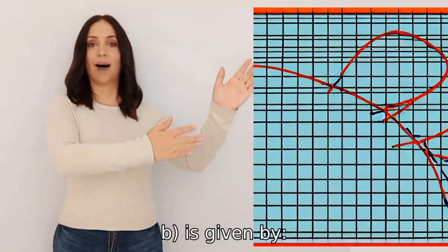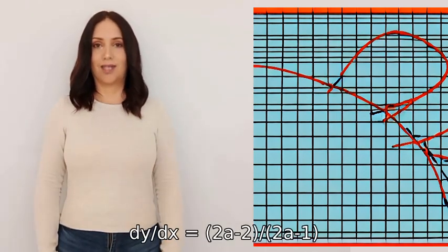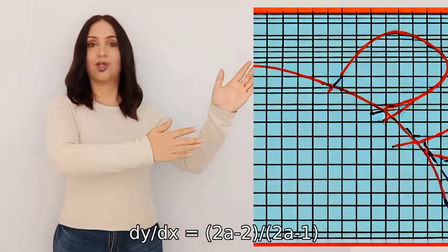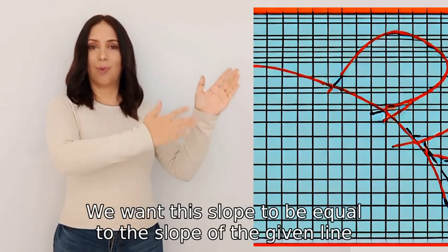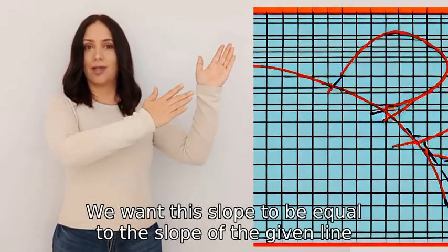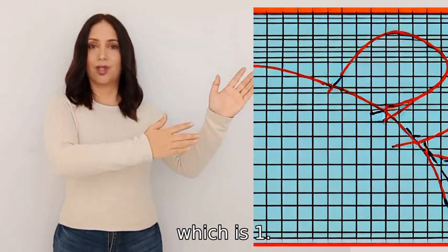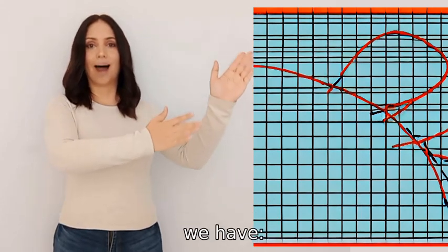The slope of the tangent at (a,b) is given by dy/dx = (2a-2)/(2a-1). We want this slope to be equal to the slope of the given line, which is 1.